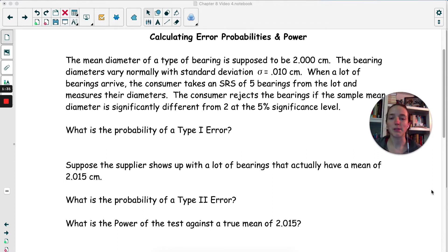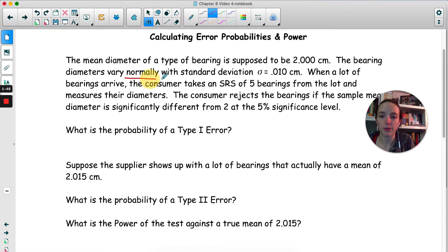The mean diameter of a type of bearing is supposed to be 2 centimeters, but the diameters vary normally. Standard deviation is 0.01 centimeters. We've got this key piece of information. We have a normal distribution.